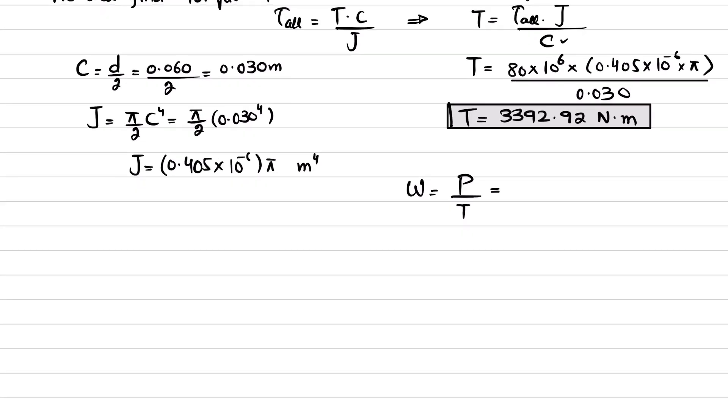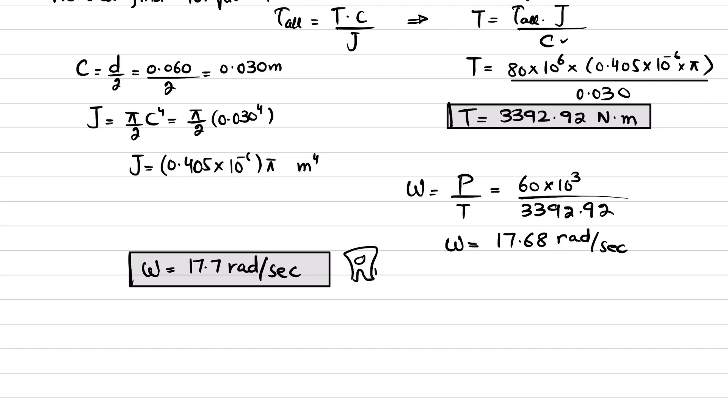Power is 60 kilowatts, so 60 times 10 to the power 3 divided by 3392.92. When you calculate it, you get 17.68 radians per second. If you round off, you get 17.7 radians per second. This is the required angular velocity of this solid steel A-36 shaft that will deliver 60 kilowatts of power.